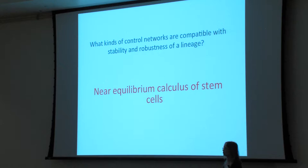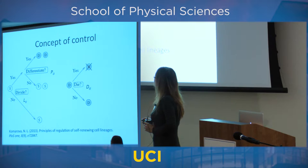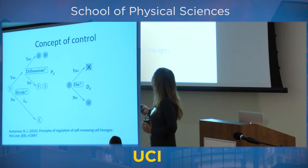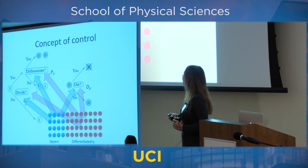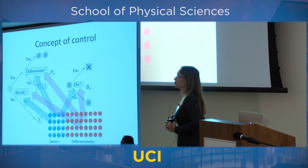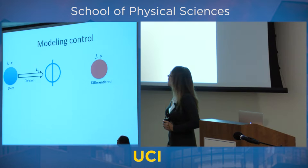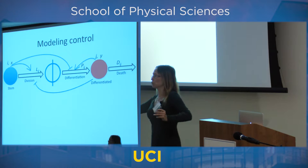What is control? A stem cell faces decisions in its life, just like we do. One decision is whether to divide or not — that has to be controlled by other cells. When it decides to divide, in the simplest case it can differentiate or proliferate. There are chemicals that diffuse from surrounding cells and tell the stem cell what to do. Mathematically, we draw arrows from cell populations to decisions, representing these controls.